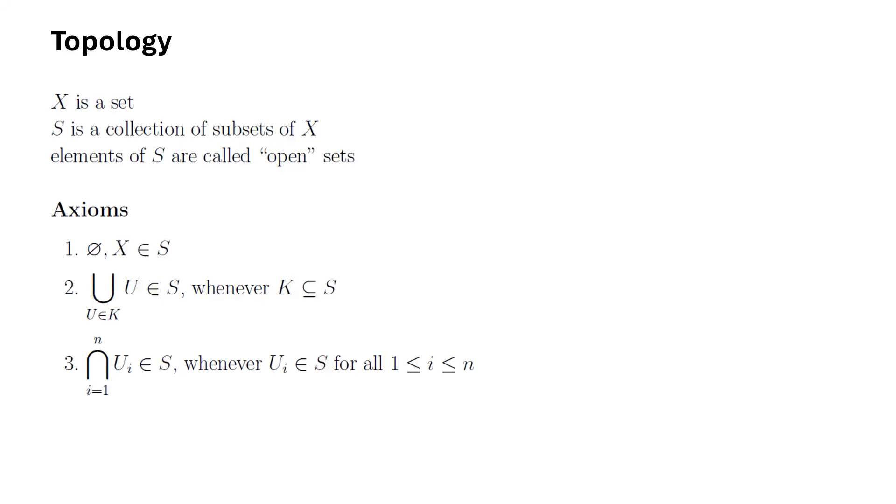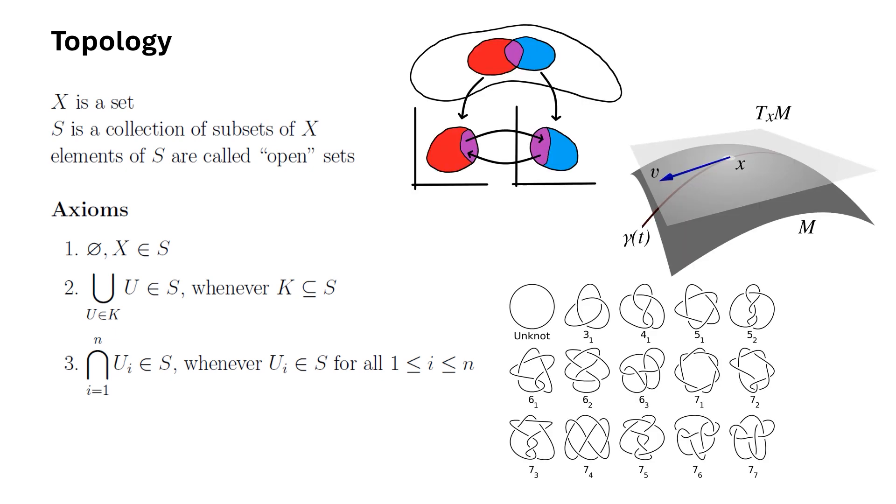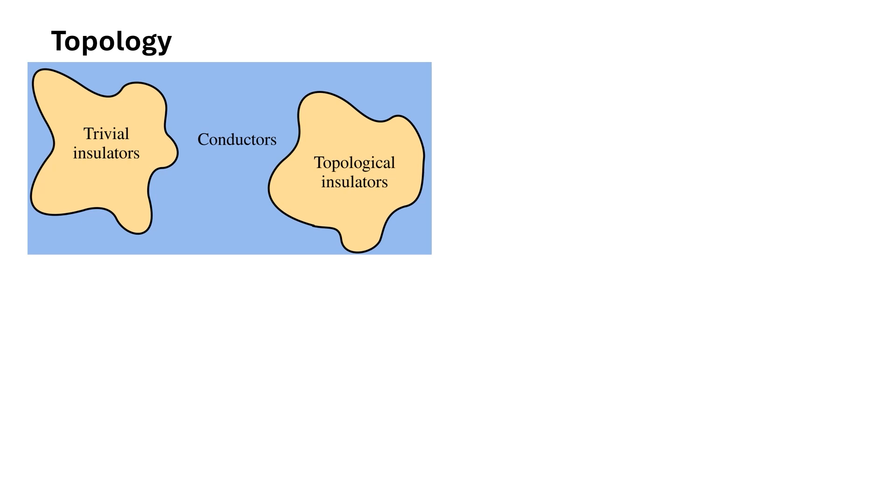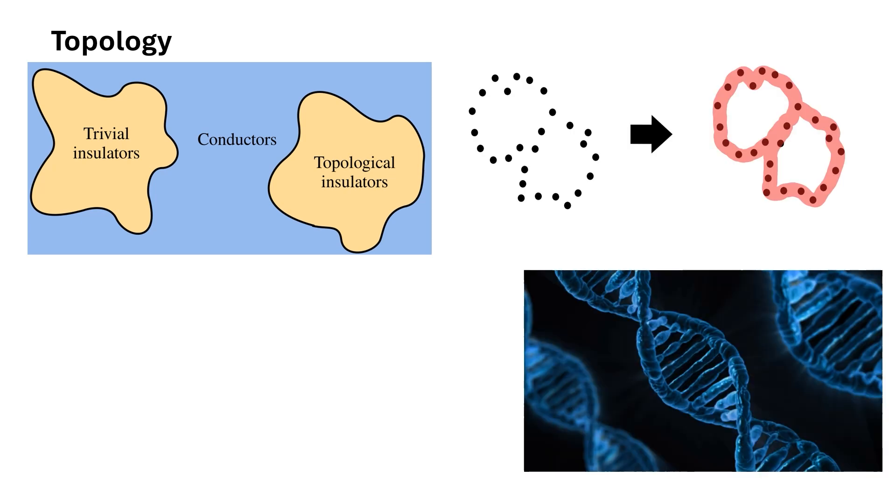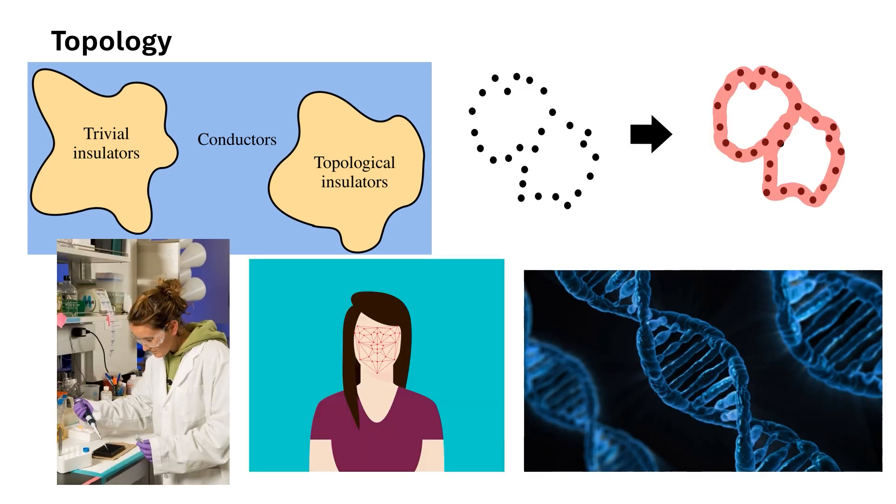Topology is closely related to geometry, and indeed it has many applications to geometric fields of mathematics, such as differential geometry, Riemannian geometry, knot theory, complex analysis, and more. Topology also has many real world applications including topological insulators, topological data analysis, biology, chemistry, image analysis, and more.